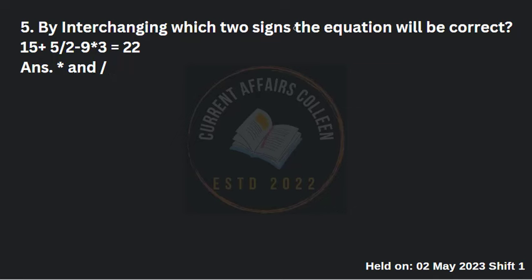Fifth question: by interchanging which two signs will the equation be correct? The equation given is 15 + 5 ÷ 2 − 9 × 3 = 22. We need to interchange two signs. There are 4 options, and you need to try each option on a trial basis to find which combination of two interchanged signs makes the equation correct.